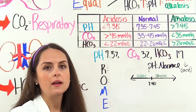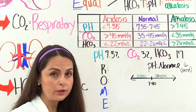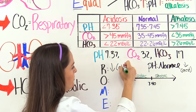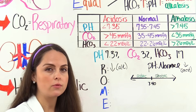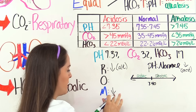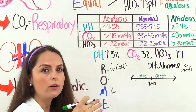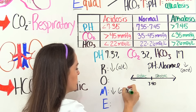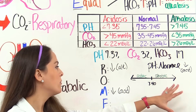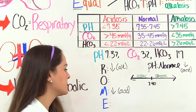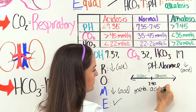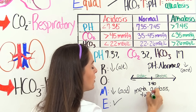We'll note it's low and put 'acid' to remember. Respiratory: normal carbon dioxide is 35 to 45, we're at 32 — low and on the alkalotic side. Our bicarb is 17. Normal is 22 to 26, so we are low on the metabolic side, and that's on the acidotic side. Using the ROME method, pH is low and metabolic is also low — they're equal. So we have metabolic acidosis, and we are fully compensated.